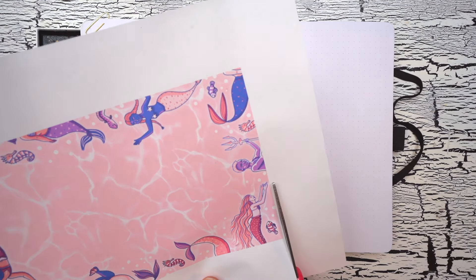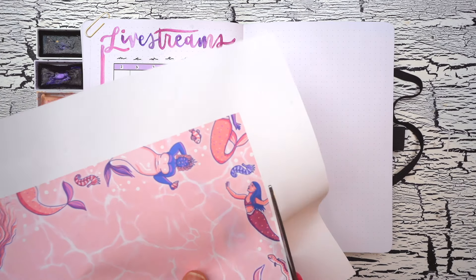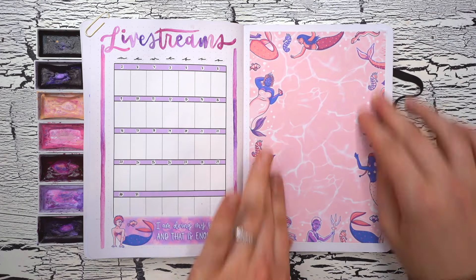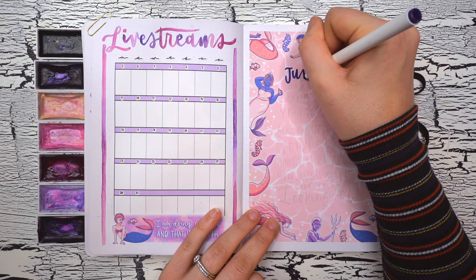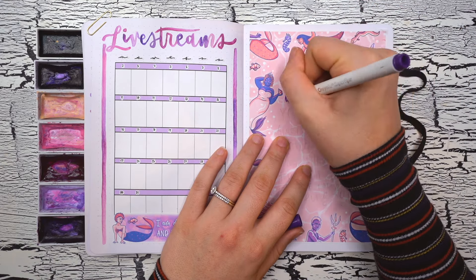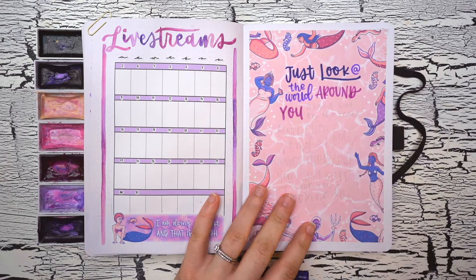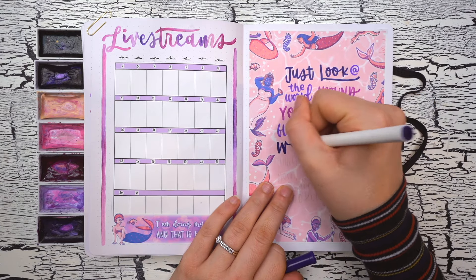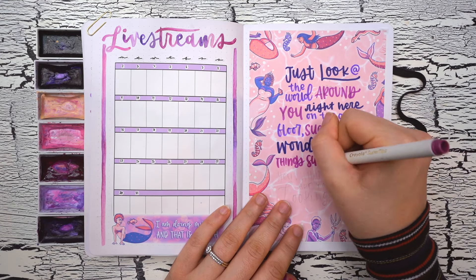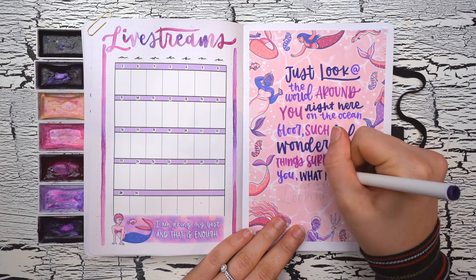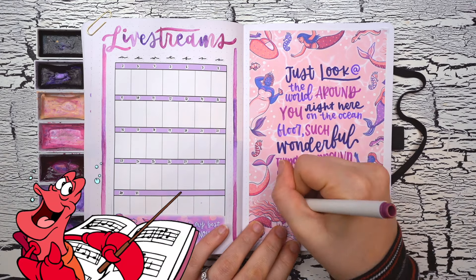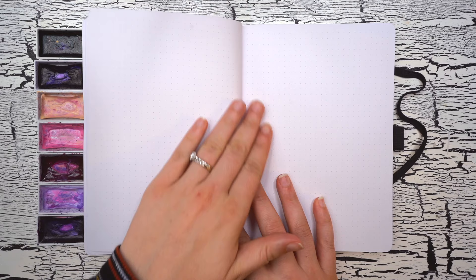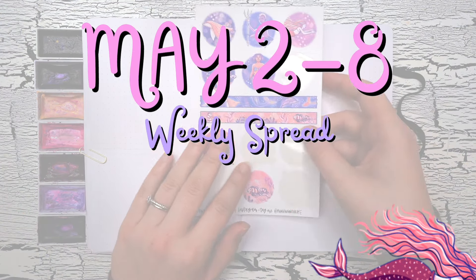Alright, so that was my last monthly page that I needed to set up, so I'm going to finish this spread off with a decorative quote page, and you guessed it, it's another under the sea lyric. This time I'm using this decorative printable that you can find on Patreon. I just printed that out on sticker paper, peeled the backing off, and stuck it right in for an easy instant background. Now I'm using my three Crayola markers to letter in my lyrics.